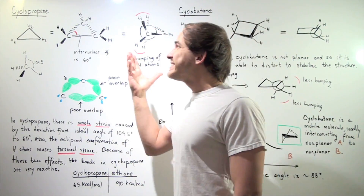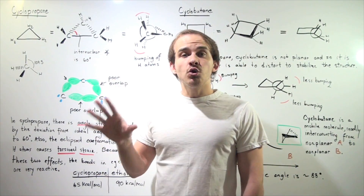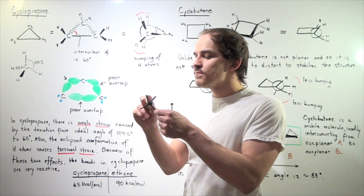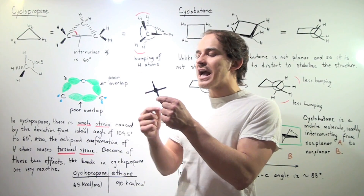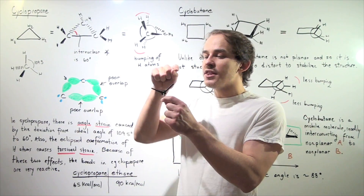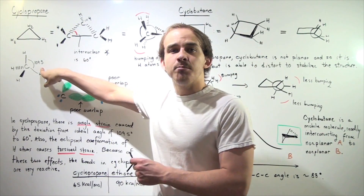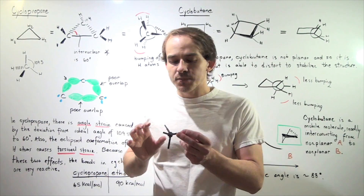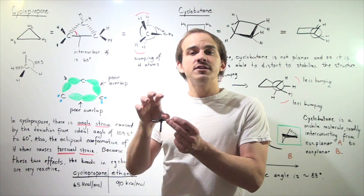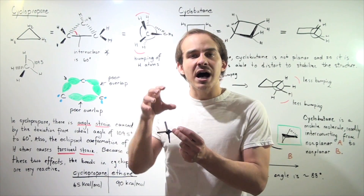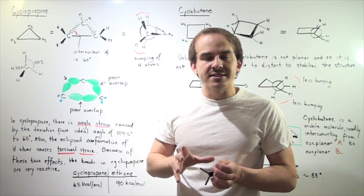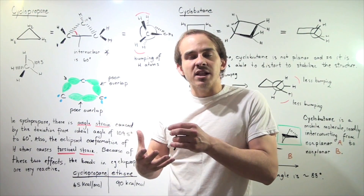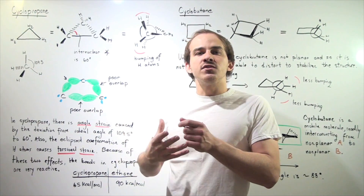Now let's compare cyclopropane to the simplest alkane, methane. Methane is composed of a carbon atom connected to four H atoms, and the H-C-H angle in methane is 109.5°. This is the ideal angle because at this angle, the electrons are as far away from one another as possible, minimizing electrostatic repulsion and stabilizing the overall molecule.